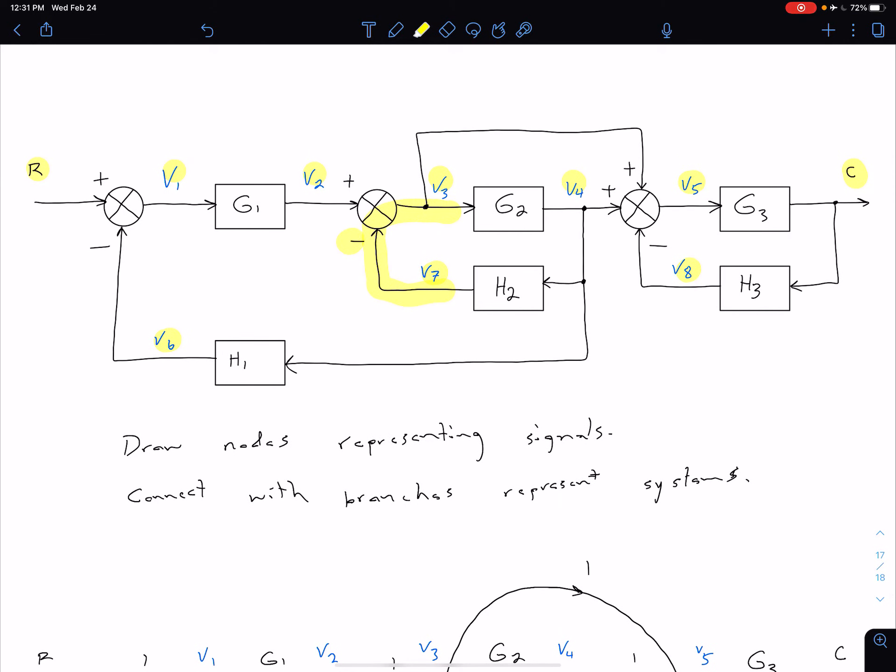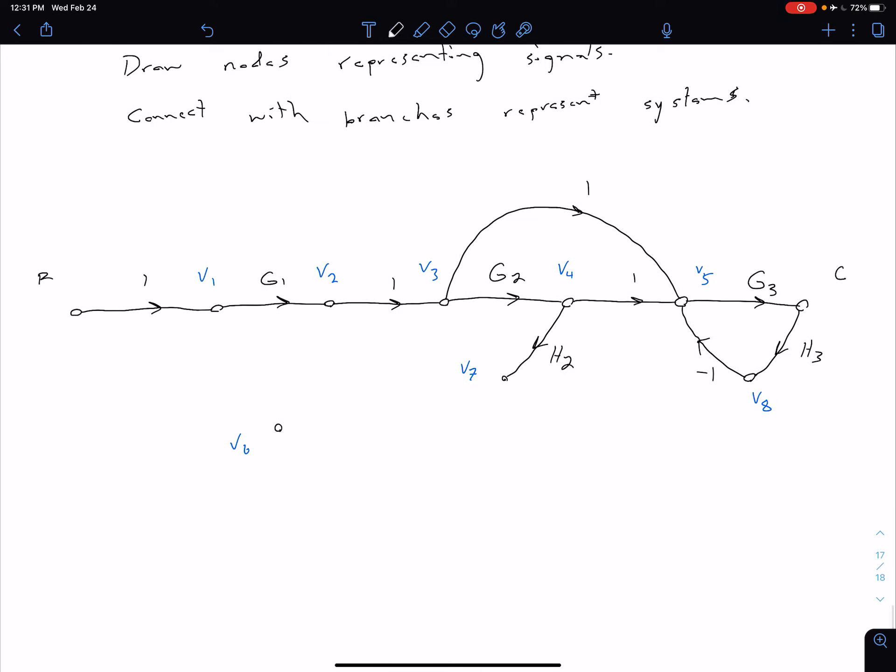And then from V7, that goes into V3. But again, that's being subtracted from our summing junction. So we just have a gain of negative one for this branch here.